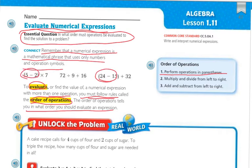If there's a parentheses, the first thing you do is take care of anything inside it. Once you've taken care of the parentheses — or even sometimes within a parentheses there might be multiple operations — the next thing you look for is multiplication and division.